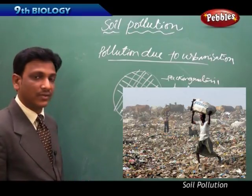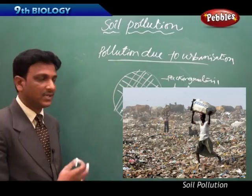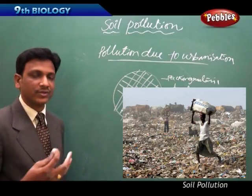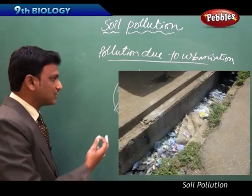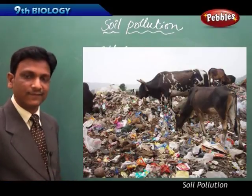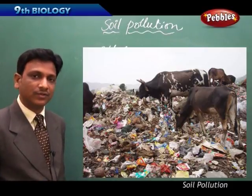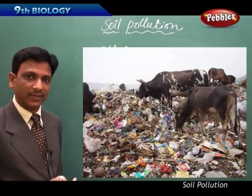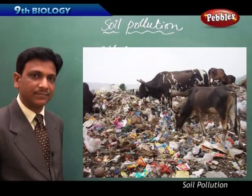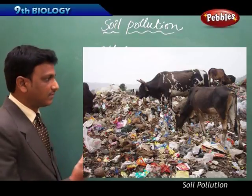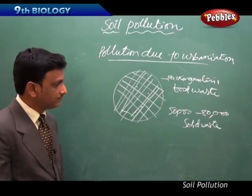Sometimes many of these materials are thrown into the drainages - they block the passage and the drainages get choked. Solid waste along with polythene covers containing food materials are thrown out, and different animals like cows and buffalo eat them. It is found that in the stomachs of these animals there are iron nails, clips, and plastic bags that are eaten by the animals, which endangers the lives of different animals.